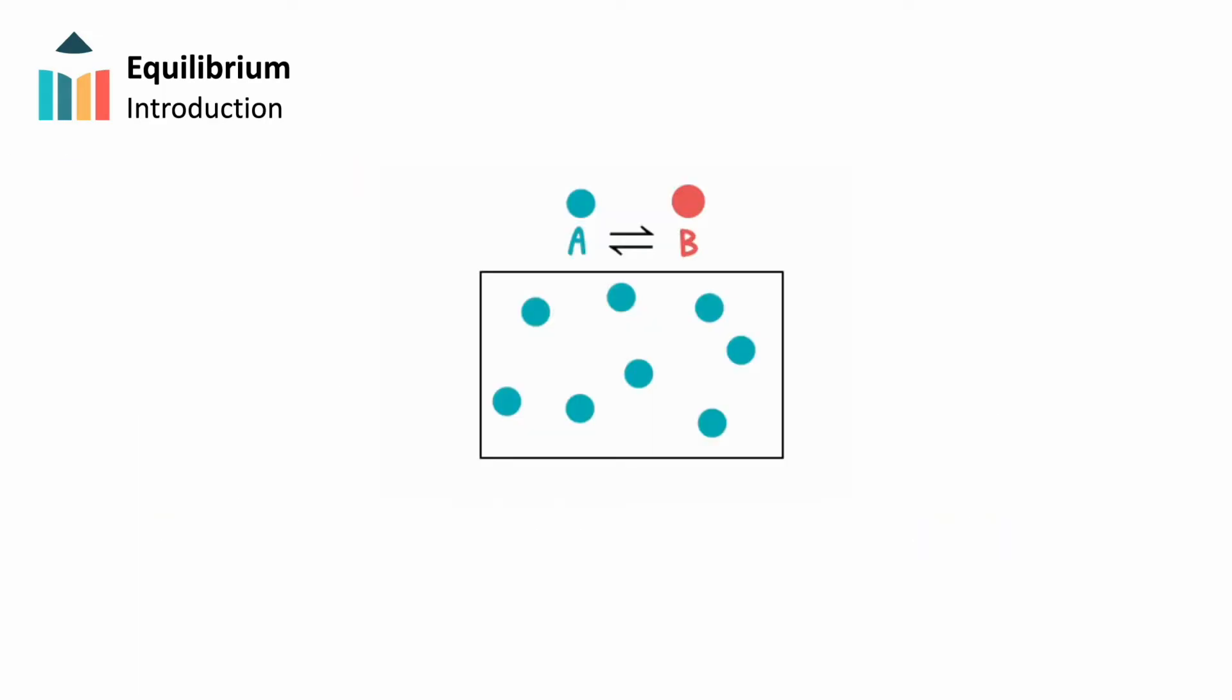At the start of a reaction there are only reactant molecules, with products formed from successful collisions of these reactant molecules. As the reaction proceeds and more product molecules are formed, product collisions can occur.